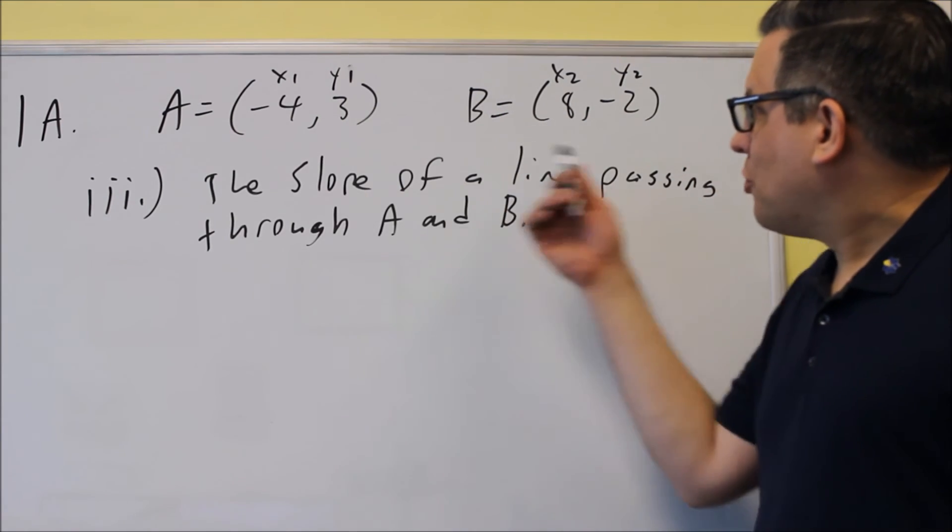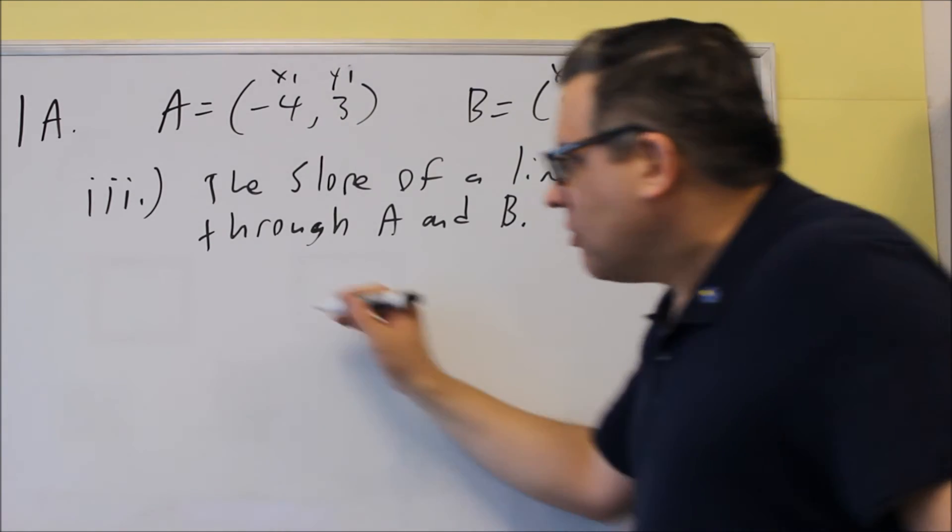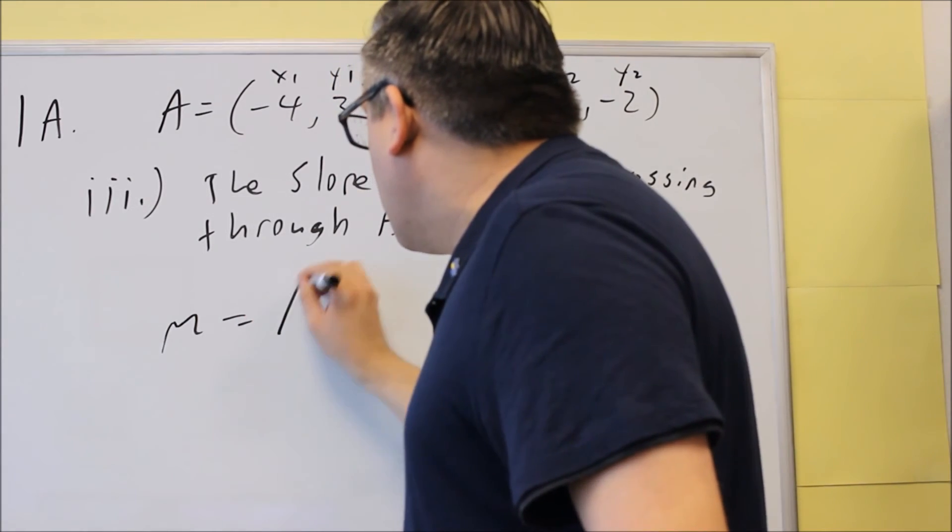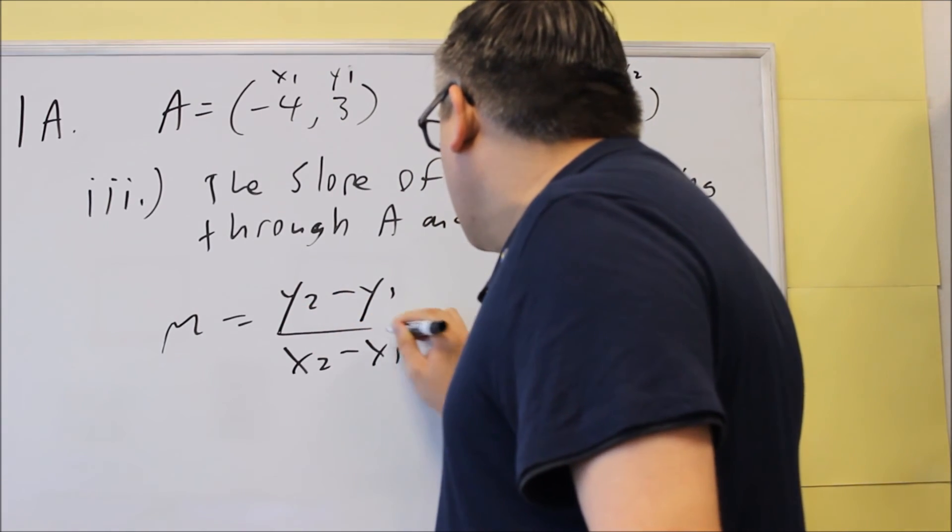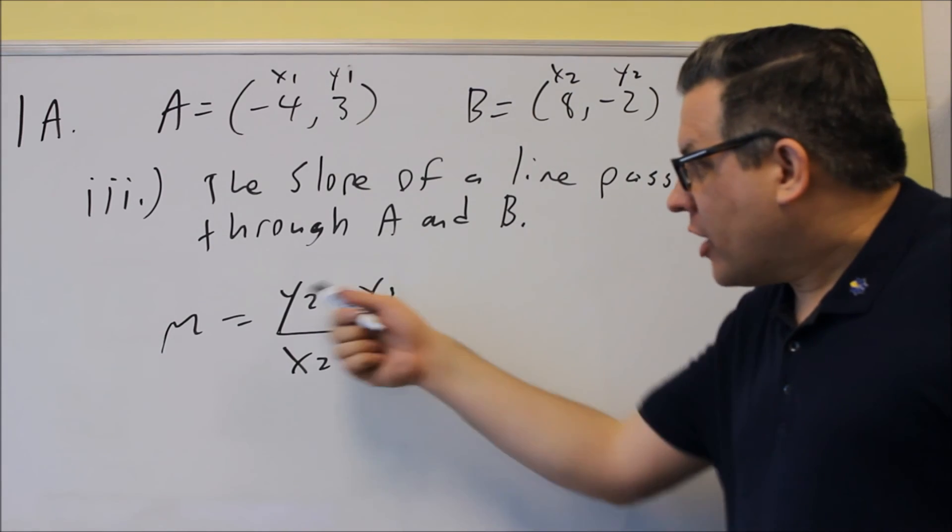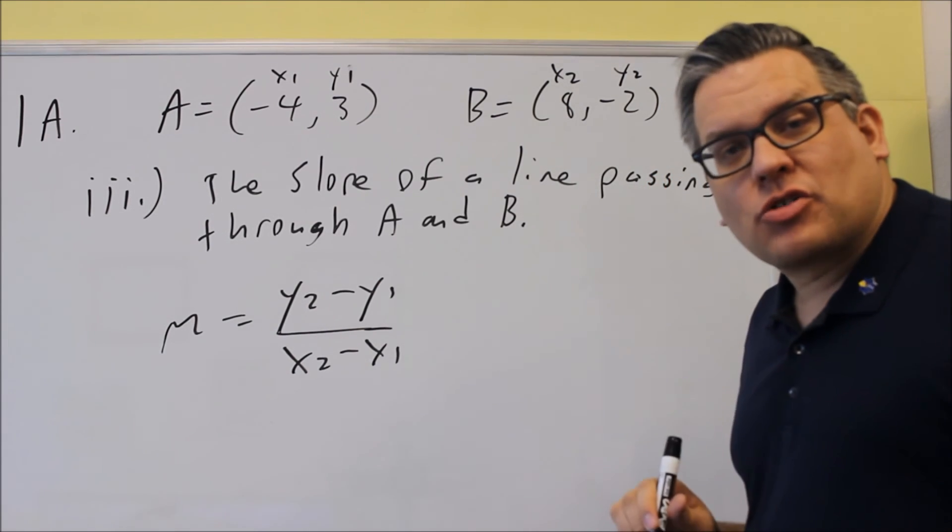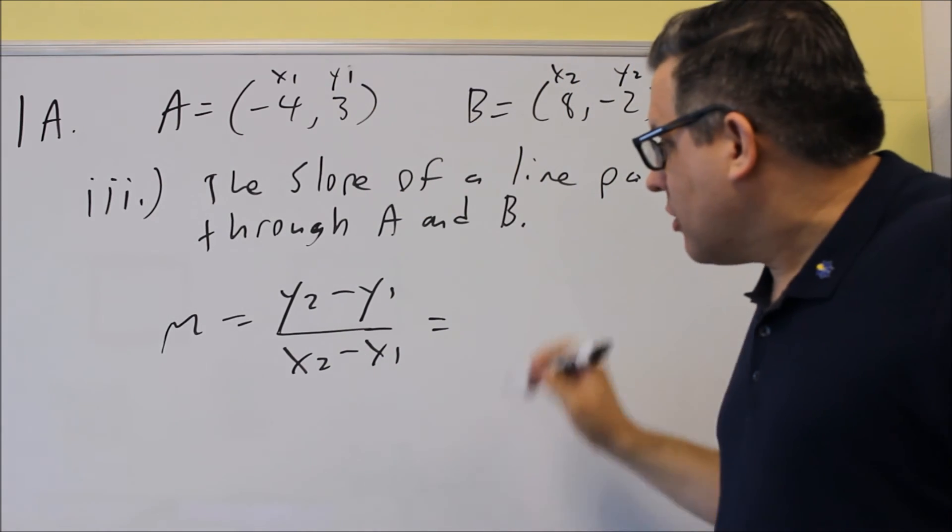Okay, for part 3, they want the slope of a line passing through A and B, so you have to know the slope formula. This is another formula you want to know for the test. The slope formula is the difference in y's over the difference in x's. So y₂ minus y₁ over x₂ minus x₁ is the formula. We're going to plug in the numbers that we see here.